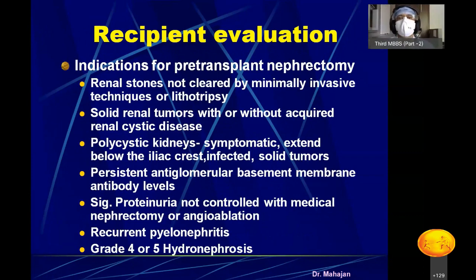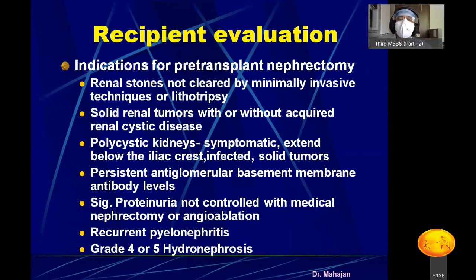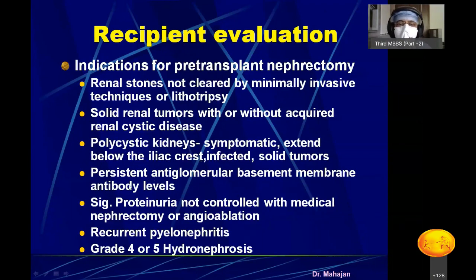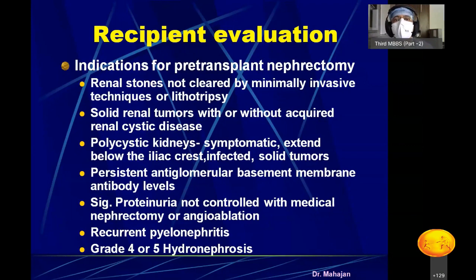Kidney transplantation is usually done in the right iliac fossa. The two non-functioning, shrunken kidneys of the recipient are not removed — so after transplantation, the patient will have three kidneys. However, there are specific indications for removing the native kidneys: renal stones, renal tumors, polycystic kidneys, persistent anti-GBM antibodies, significant proteinuria, pyelonephritis, and gross hydronephrosis. Otherwise, the non-functioning kidneys are left, and the new functioning kidney is placed in the right iliac fossa.